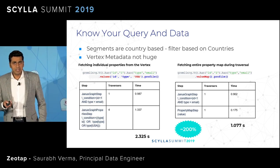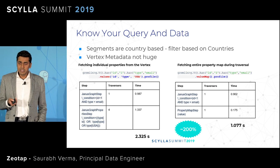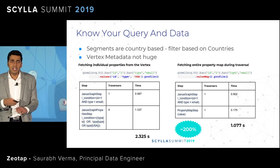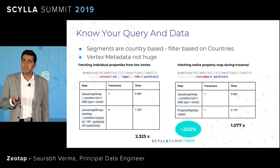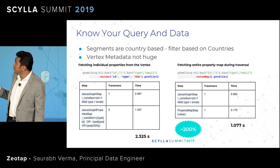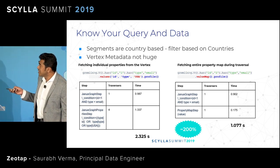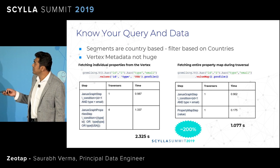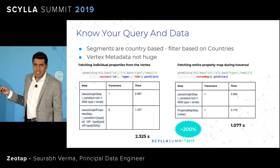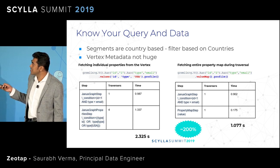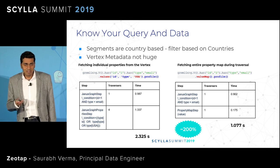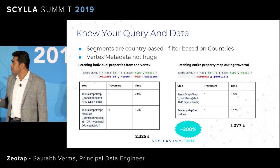Another very important thing in terms of traversal: in spite of graph giving traversal advantages, you should know your query and your data. For us, all of our data access is based on a country filter. There are two ways of doing it: one is to filter the country in the query and fetch it from the DB; another is to take the full profile map and do it on the client side. We figured out that since our vertex metadata is not that large — currently we have only four or five properties — fetching without filter takes around one second, while filtering in the query took around two seconds, a 200% increase. So it is always good to have a sense of your data when issuing queries. This comes from production experience, naturally.